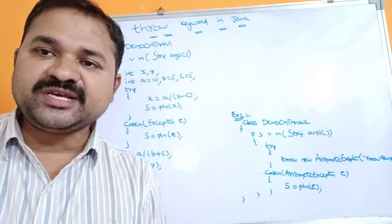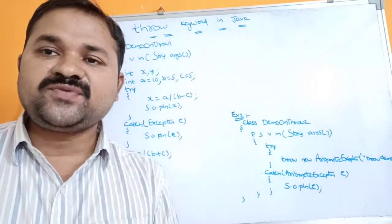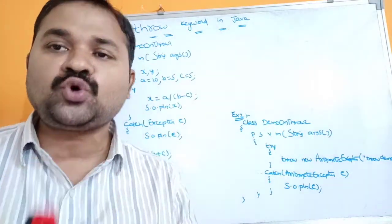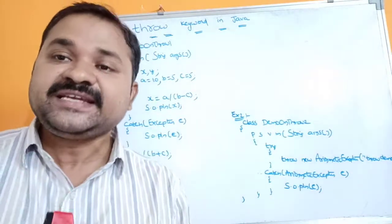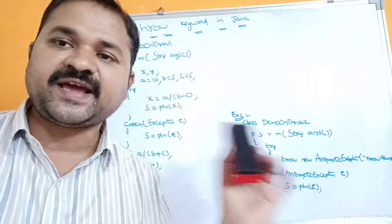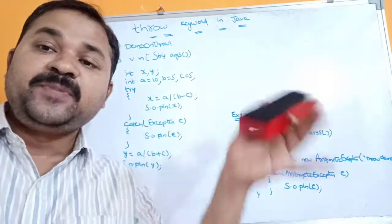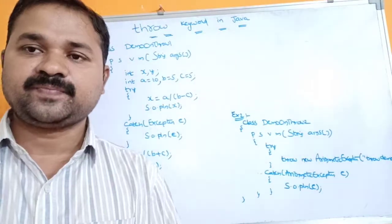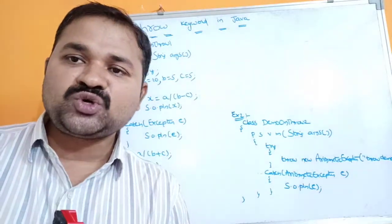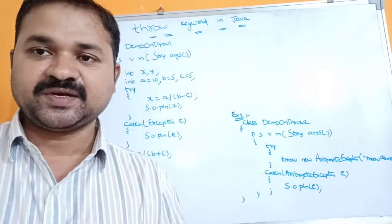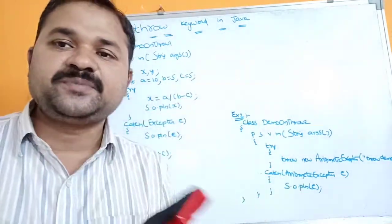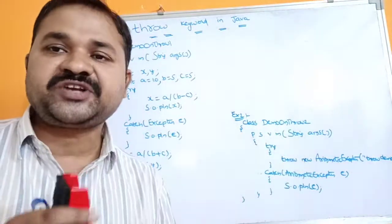In this video we are going to discuss about the throw keyword in Java. The throw keyword is mainly useful in order to throw an exception object explicitly. Generally, whenever there is an exception in the try block, throw keyword implicitly throws the exception to the catch block. If we want, with the help of throw keyword, we can throw an exception object explicitly.